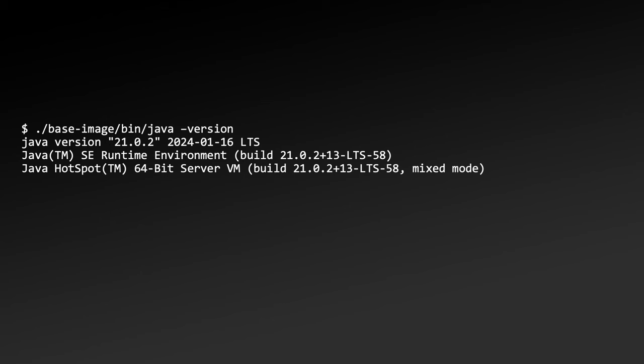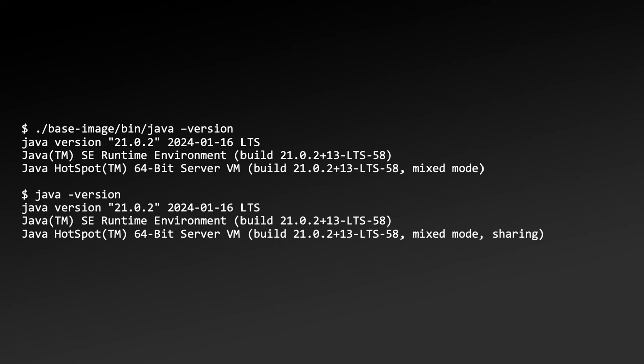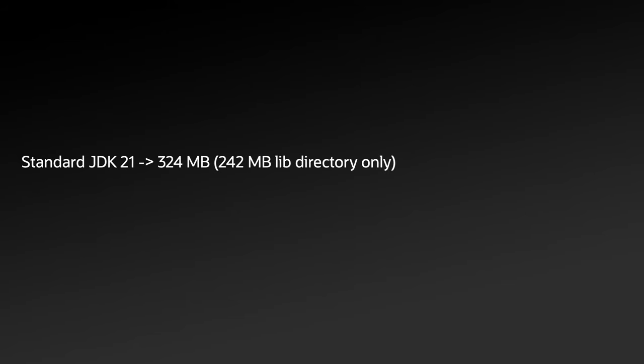The Java launcher contained in the runtime image we created isn't anything special, and if we pass the version option to it, it produces the same output as the standard JDK 21 image. So why go through the extra steps of using JLink? We can answer this question by first looking at the size comparison of the runtime images. Using sizes for an Intel-based macOS, the standard JDK 21 directory would be 324 megabytes, or 242 megabytes narrowed down to just the lib directory. The base image containing only Java base would clock in at 48 megabytes.